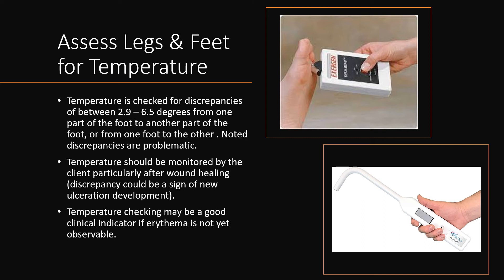Temperature is checked for discrepancies between 2.9 to 6.5 degrees from one part of the leg or foot to another part of the same leg or foot, or from one foot or leg to the other. Noted discrepancies are problematic. Temperature should be monitored by the client, particularly after wound healing, as discrepancies could be a sign of new ulceration development. Temperature checking may be a good clinical indicator if erythema is not yet observable.